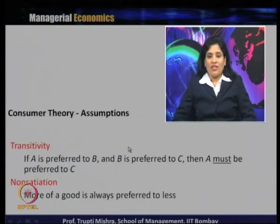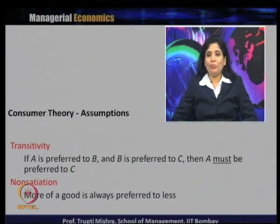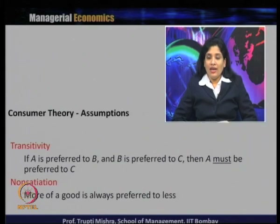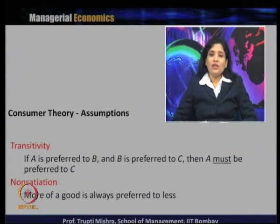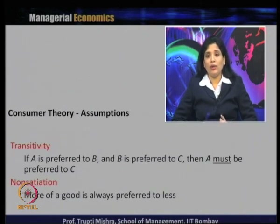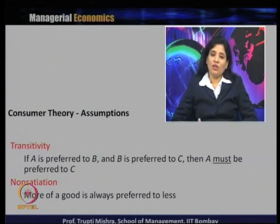The second assumption is transitivity. Under transitivity, if A is preferred to B and B is preferred to C, then A must be preferred to C. Here A, B, and C are different consumption bundles. The transitivity assumption says that if a consumer prefers B to C and A to B, then A must be preferred to C.